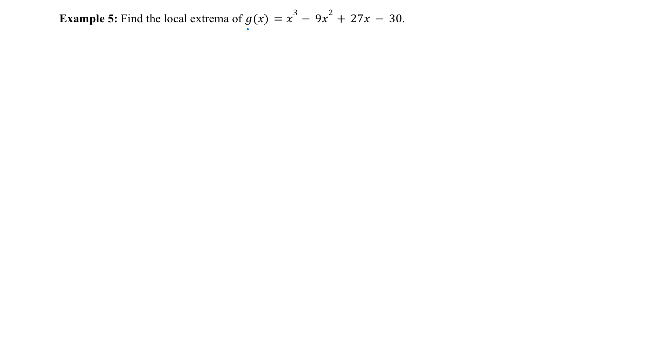Let's look at one more example using the first derivative test. Let's find the local extrema of the graph of g of x, which is given by x cubed minus 9x squared plus 27x minus 30.